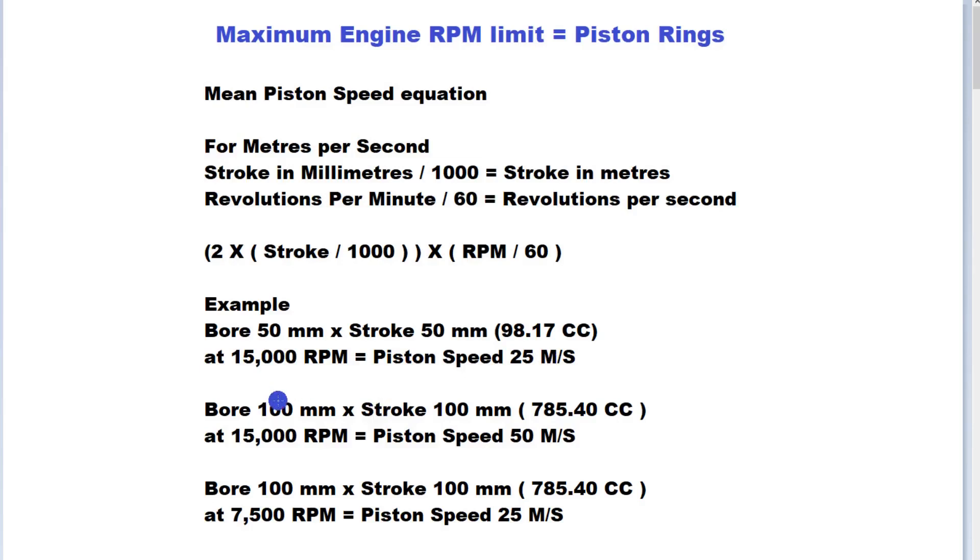If we've got a bore of 100 millimeters and a stroke of 100 millimeters, we've got a total capacity of 785 or 786 CC thereabouts. At 15,000 RPM for that engine, our mean piston speed is at 50 meters per second. That goes beyond our 30 meters per second which is probably the absolute limit.